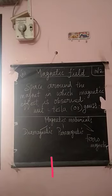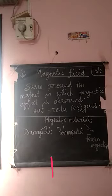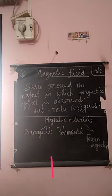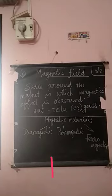If a diamagnetic material is suspended in a non-uniform magnetic field, it has a tendency to move away from the stronger part to the weaker part. Then it gets magnetized in the direction opposite to the magnetic field.